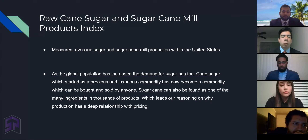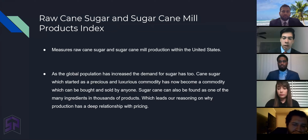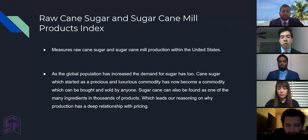The next variable would be the raw cane sugar and sugarcane mill production index, which measures raw cane sugar and sugarcane mill production within the United States as a whole. As the global population as well as the United States population increases, the demand for sugar has too. Cane sugar, which started as a precious luxurious commodity, has now become a commodity which can be bought and sold by anyone, anywhere, anytime. Sugarcane can also be found as one of the many ingredients in thousands of products within the United States as well as in the world, which leads to our reasoning on why production has a deep relationship with pricing.